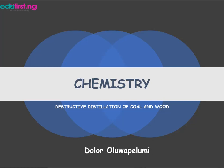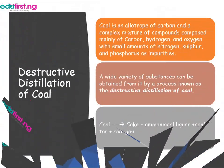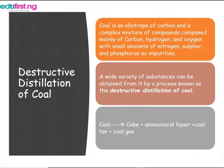Hello everyone and welcome to today's episode of chemistry class. Our topic for today is destructive distillation of coal and wood. Coal is an allotrope of carbon and a complex mixture of compounds.